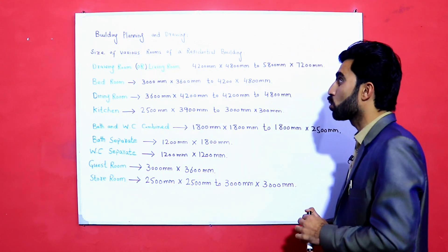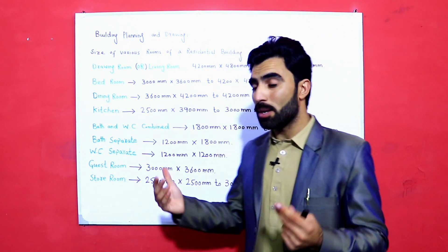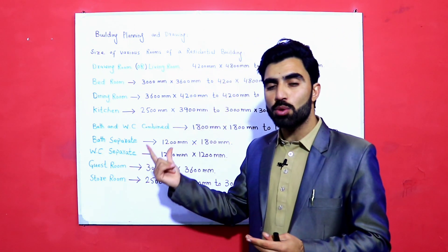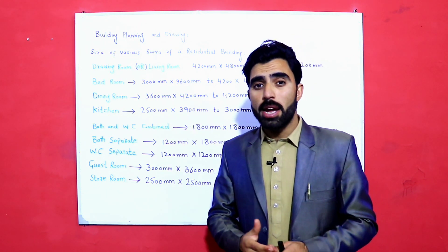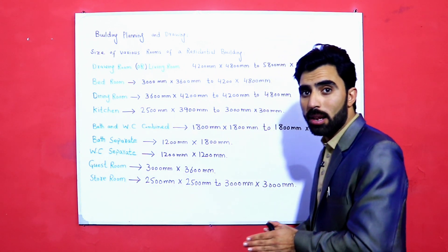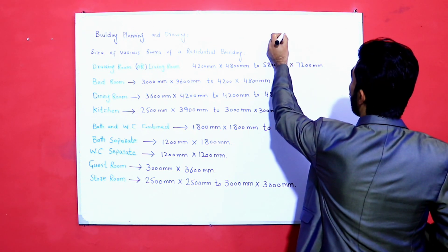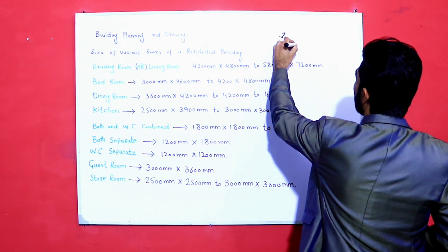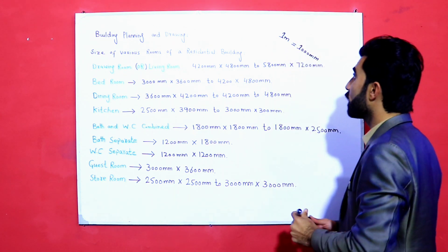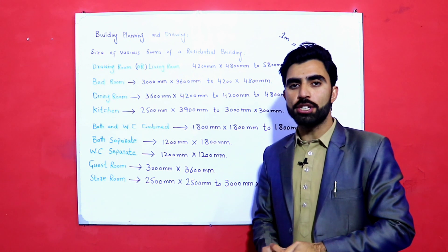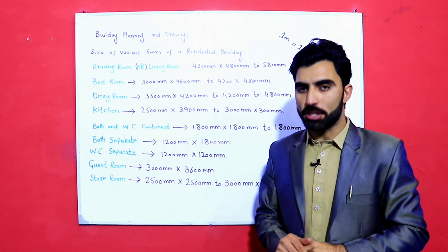The topic is the size of various rooms of a residential building. The sizes discussed in this video are given in millimeters. If you want to convert to meters, divide by 1000, because one meter equals 1000 millimeters.